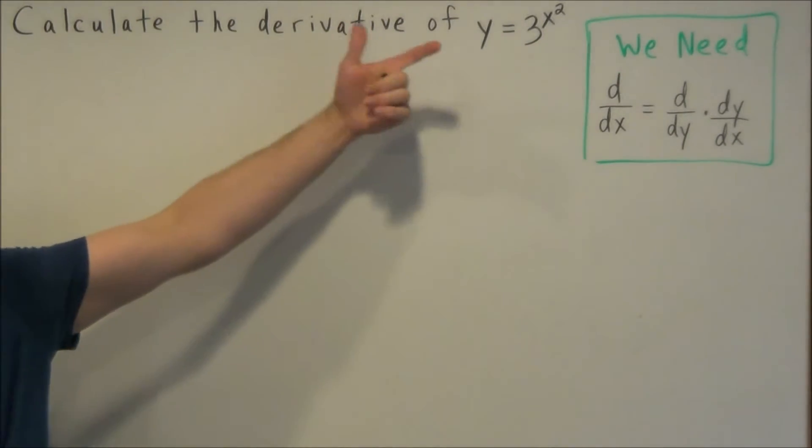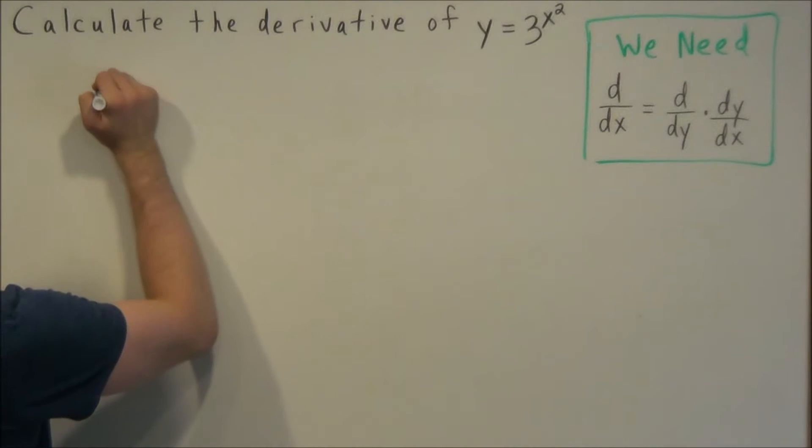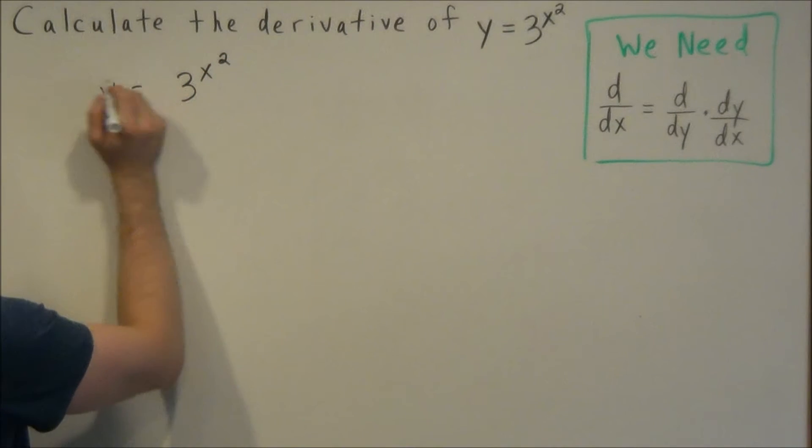So to find this derivative with logarithmic differentiation, we start off with y equals 3 to the x squared power, and we want to take the log of both sides. We'll use the natural log here.